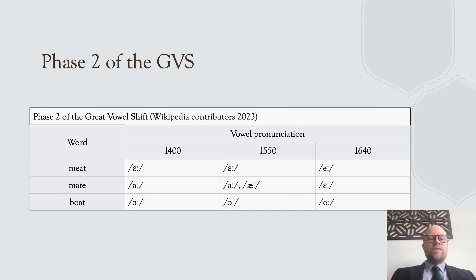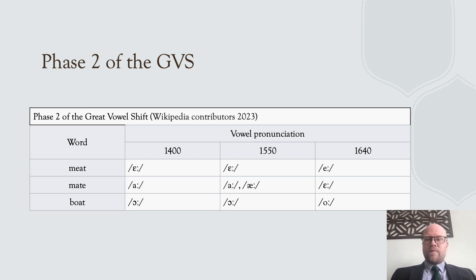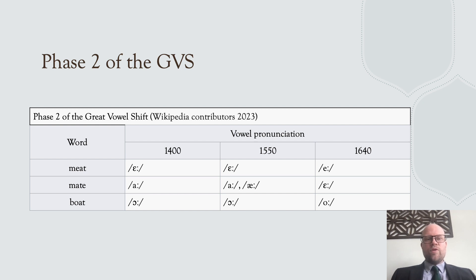For the word 'boat', you had 'bought' in 1400, which stayed similar by 1550, but by 1640 you had 'boat' — the same pronunciation we use today. This illustrates the usefulness of knowing the vowel changes: the spelling 'oa' in 'boat' reflects the Middle English 'aw' vowel pronunciation.